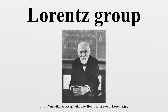For this reason, the Lorentz group is sometimes called the homogeneous Lorentz group, while the Poincaré group is sometimes called the inhomogeneous Lorentz group. Lorentz transformations are examples of linear transformations. General isometries of Minkowski spacetime are affine transformations.